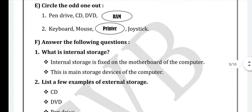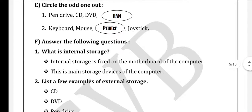Circle the odd one out. First: Pen drive, CD, DVD — all three are storage devices, but RAM is internal storage while the others are external storage devices — so RAM is the odd one out. Second: Keyboard, Mouse, Joystick — three input devices; Printer is output — Printer is the odd one out.